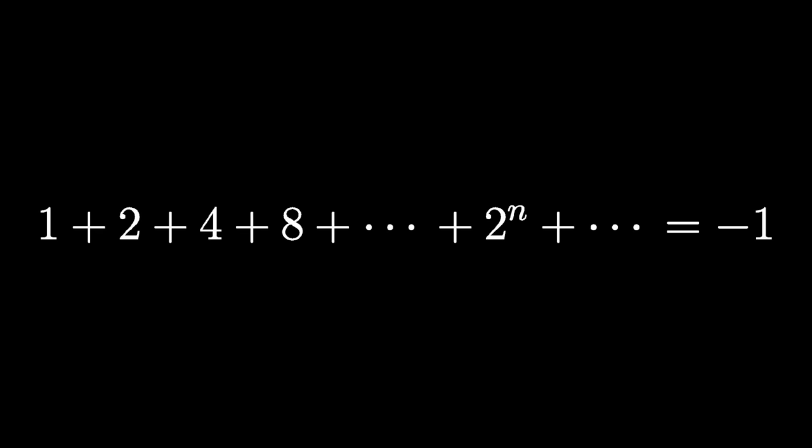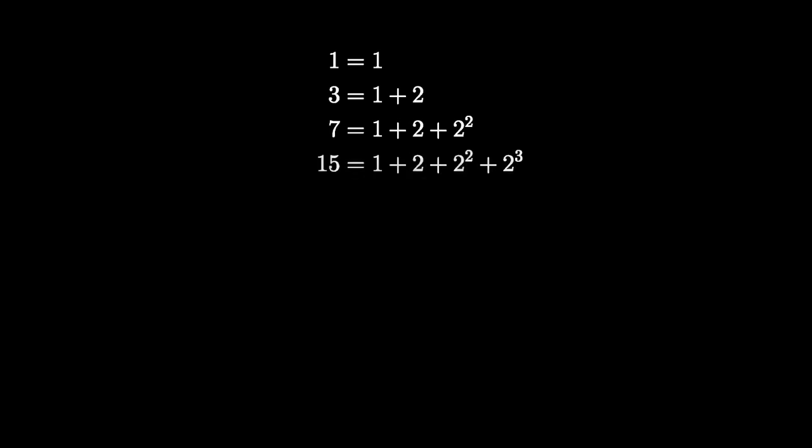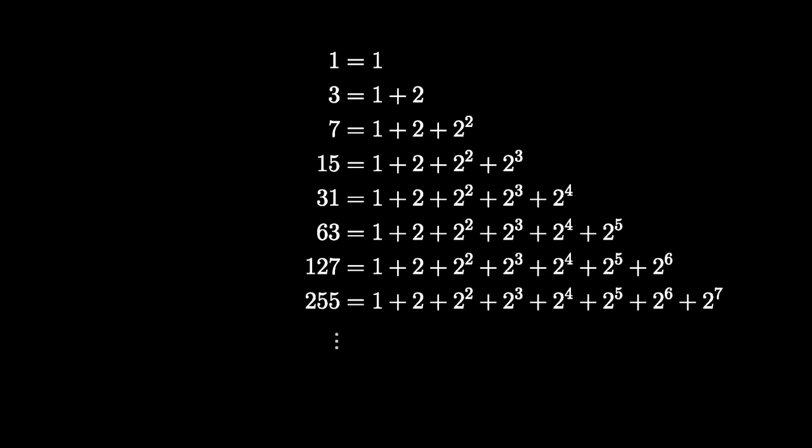Using the two-adic metric, the fact that the sum of all powers of two equals negative one actually makes sense, because the numbers 1, 3, 7, 15, 31, and so on genuinely approach negative one.